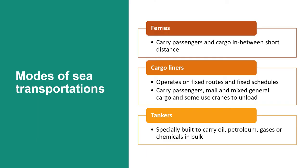Now we'll see the modes of sea transportation. First, ferries, which carry passengers and cargo over short distances. Then cargo liners, which operate on fixed routes and fixed schedules, carrying passengers, mail, and mixed general cargo — some use cranes to unload. Then tankers, which are specially built to carry oil, petroleum, gases, or chemicals in bulk.